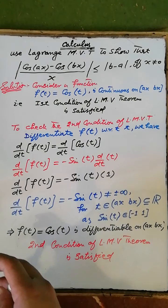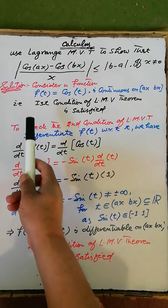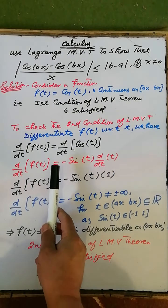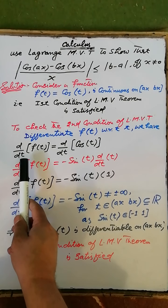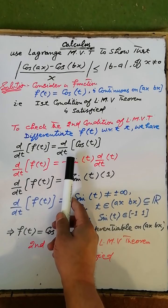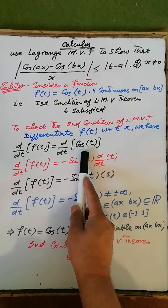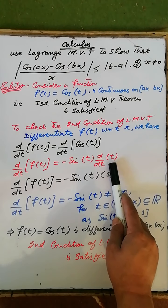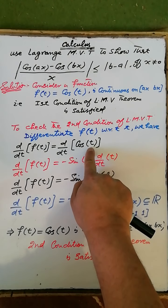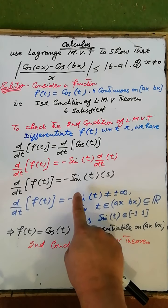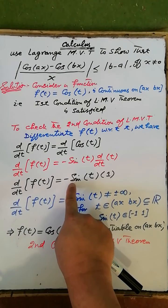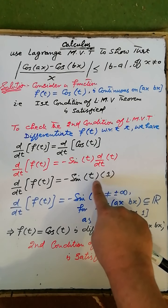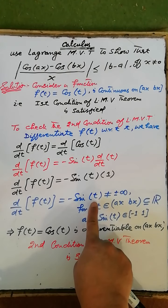To check the second condition of the Lagrange Mean Value theorem, differentiate f(t) = cos(t) with respect to t: d/dt of cos(t) is equal to -sin(t) multiplied by the derivative of t with respect to t, where t is the angle, which equals -sin(t) × 1 = -sin(t).